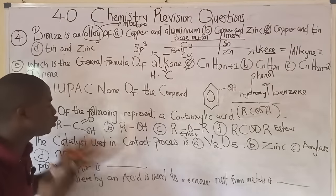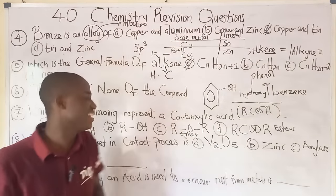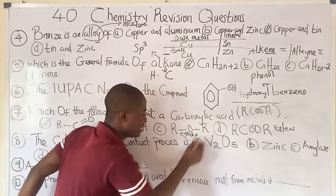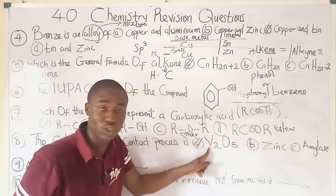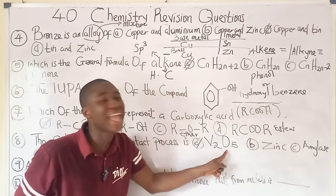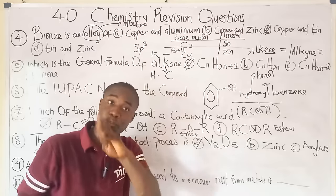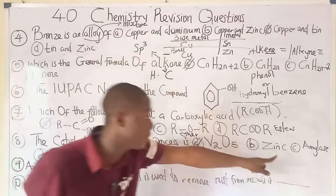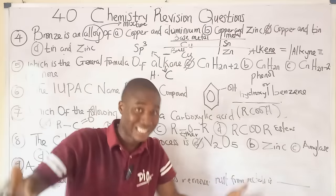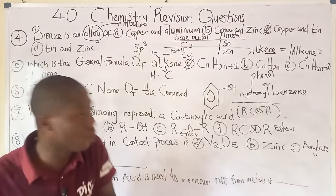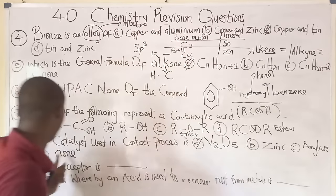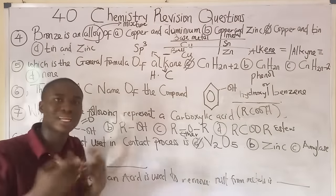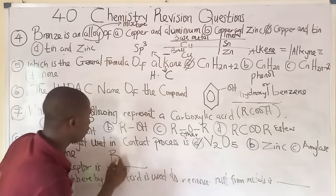Question eight: the catalyst used in the contact process is vanadium pentoxide (V₂O₅) — option A. It is not zinc, and it is not amylase. Amylase is an enzyme, which is a biological catalyst. Question nine: a proton acceptor is called a base, while a proton donor is called an acid.